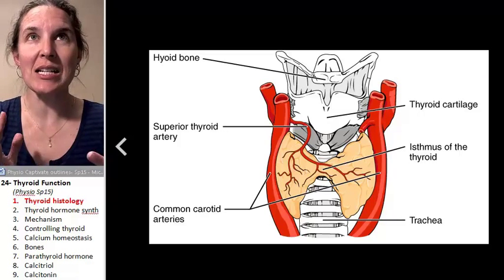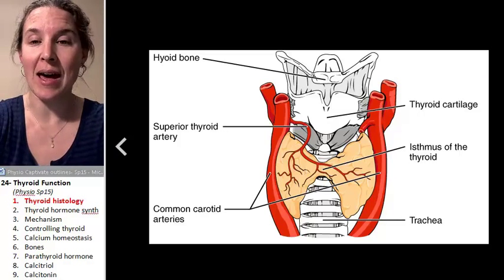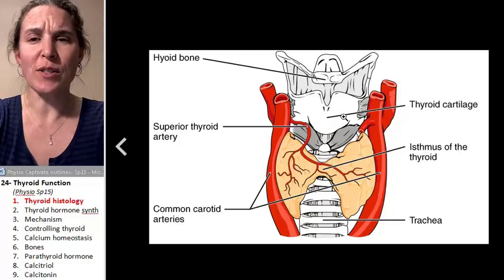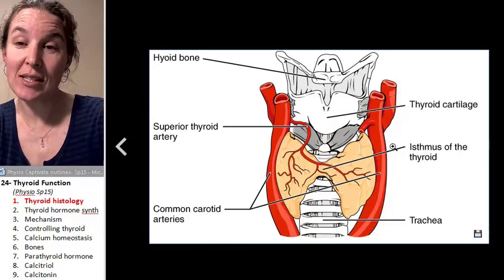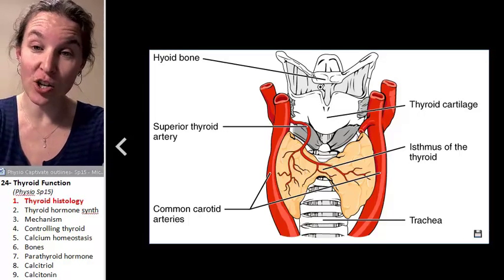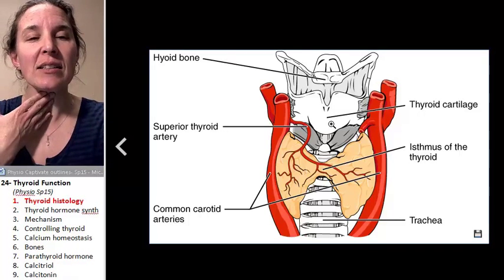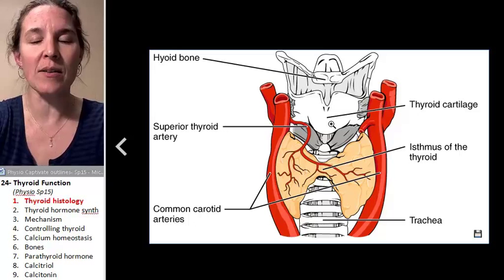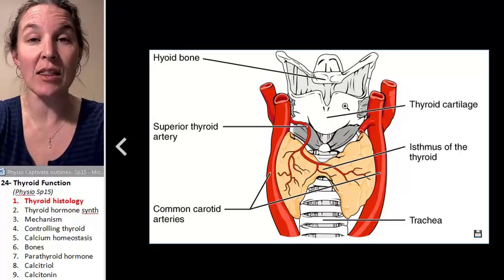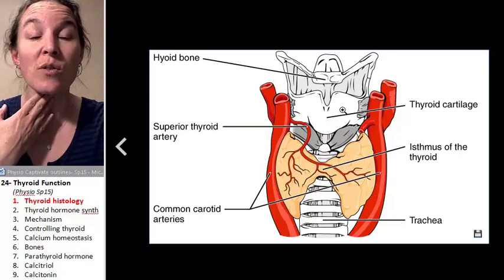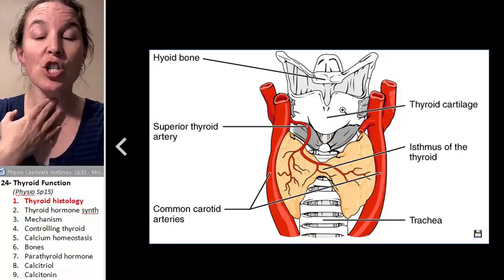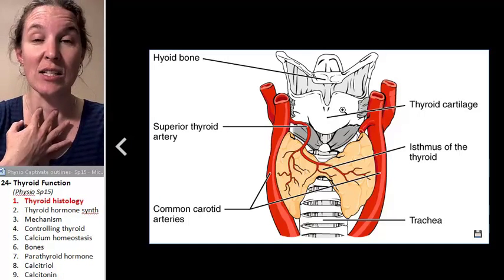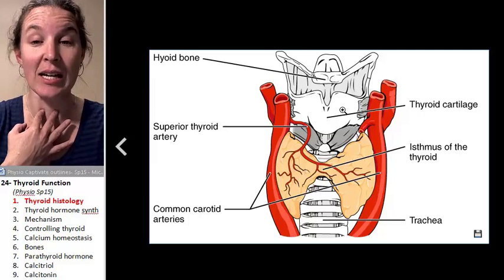Before we start, we kind of need to do a little bit of thyroid anatomy. This is gross anatomy of the thyroid, super gross. You can see the trachea here, and you can see the larynx. The larynx, this in particular is the thyroid cartilage of the larynx, also known as the Adam's apple. If you find your Adam's apple just inferior to that is where your thyroid gland would be.